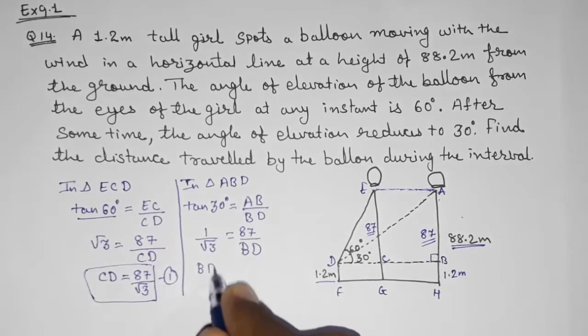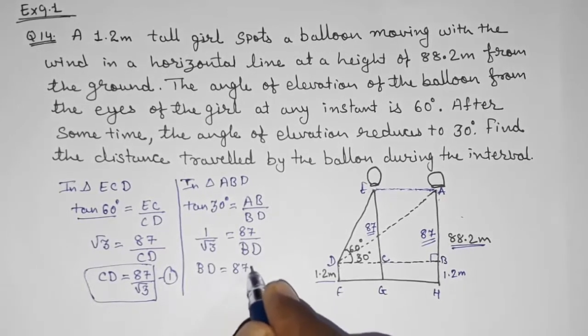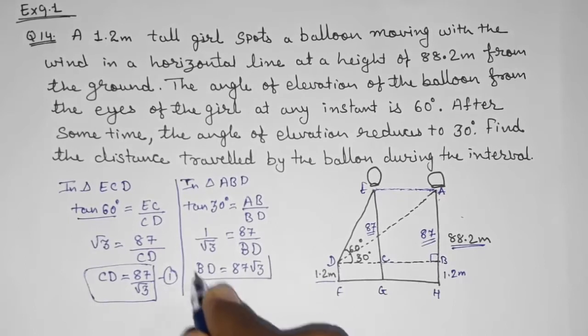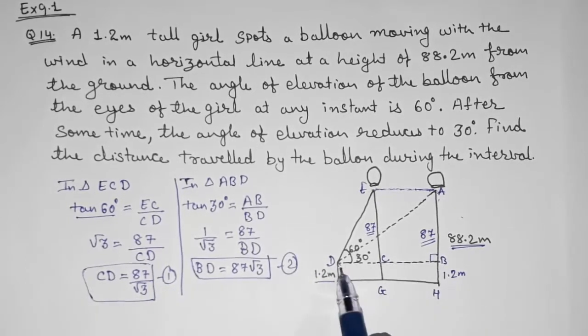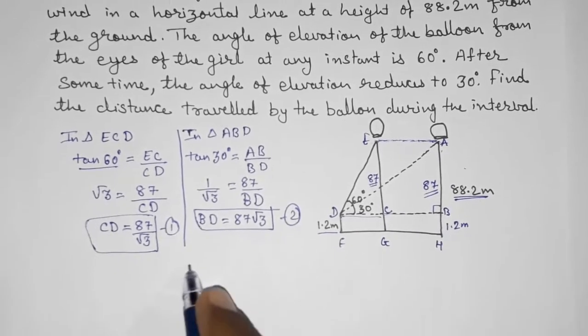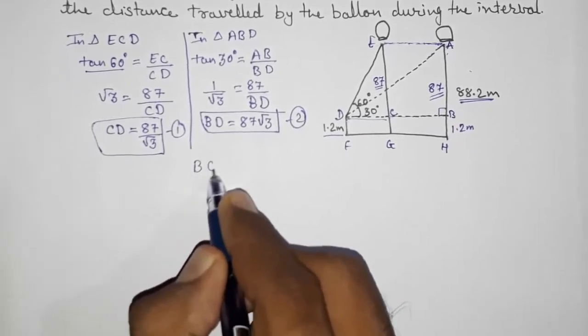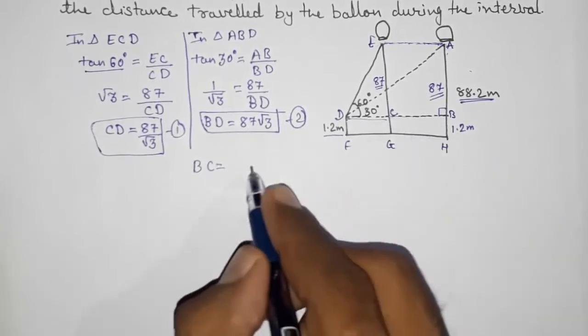Now we got this whole distance, we got this distance, so we can find out BC easily. How? From one and two by putting one and two: BC equals to BD minus CD.